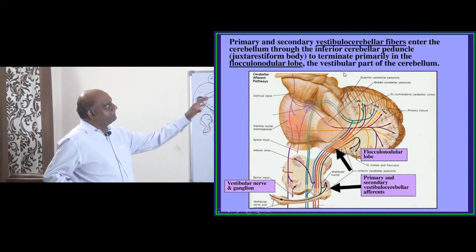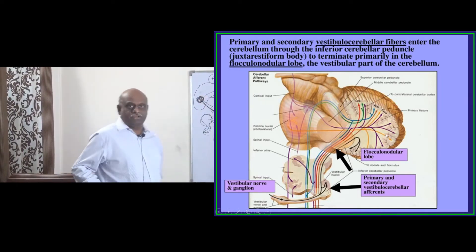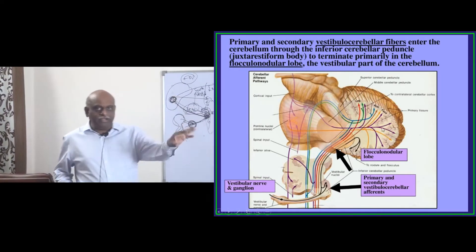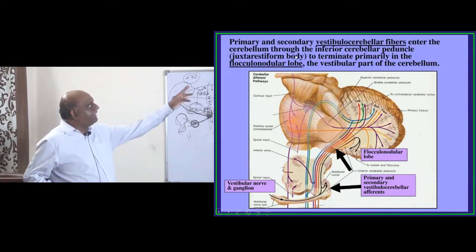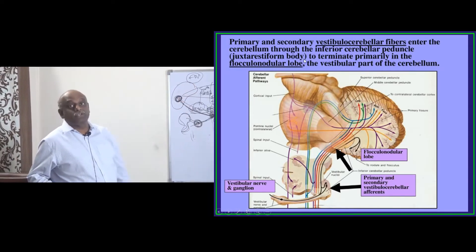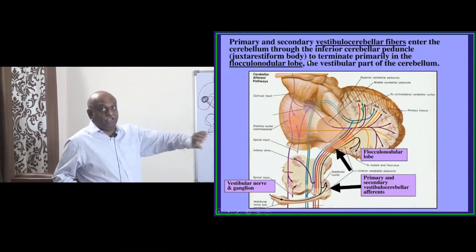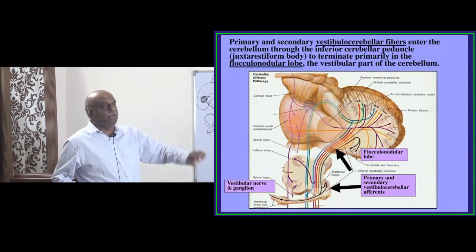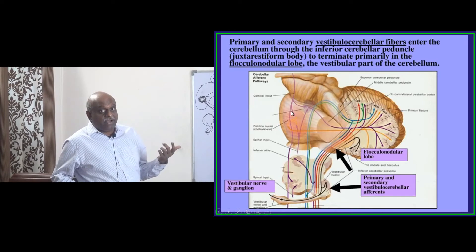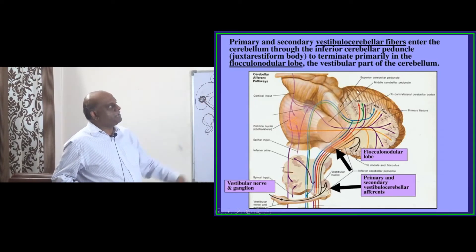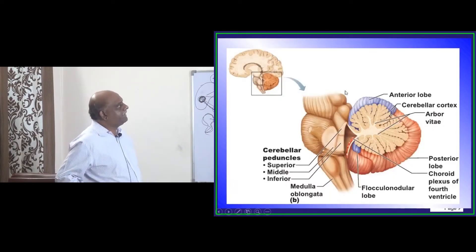How do the vestibulocerebellar fibers enter the cerebellum? Through the inferior cerebellar peduncle, and there is a restiform body as they pass through it. Where do they ultimately terminate? That is the examiner's question — the flocculo-nodular lobe is what you have to ultimately remember.